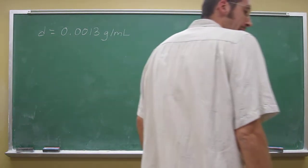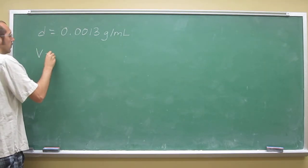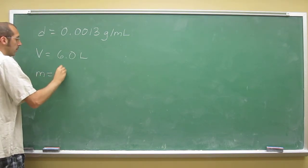Now, what is the mass of 6 liters? So we know the volume is 6 liters, 6.0 liters. What is the mass we're looking for?